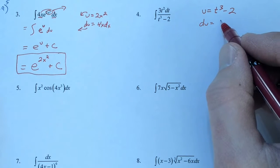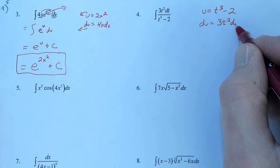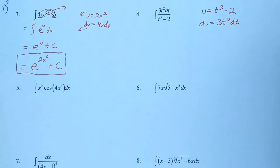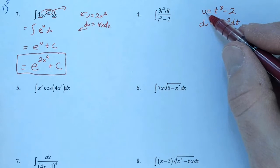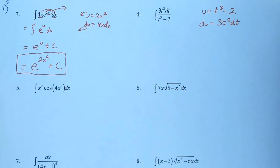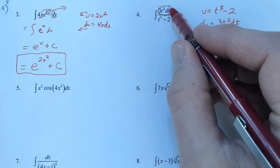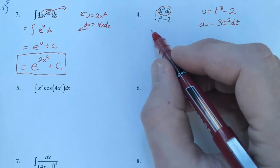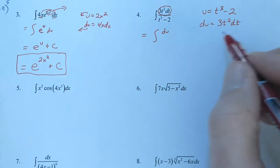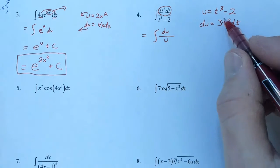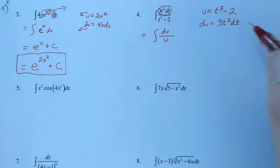That will make du equal to 3t squared dt. It doesn't matter that we don't have x this time. Whether it's x or t or some other letter, does not matter, we're just working with a relationship between u and that variable. So we need 3t squared dt, and lo and behold, we have 3t squared dt. That's equal to du, so our numerator will be du. The denominator will be u because t cubed minus 2 is the same thing as u.